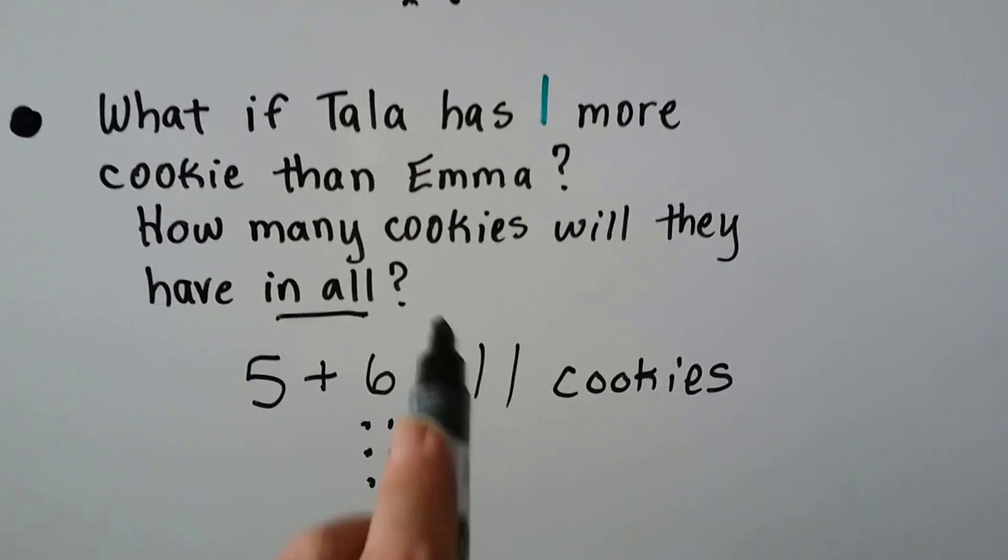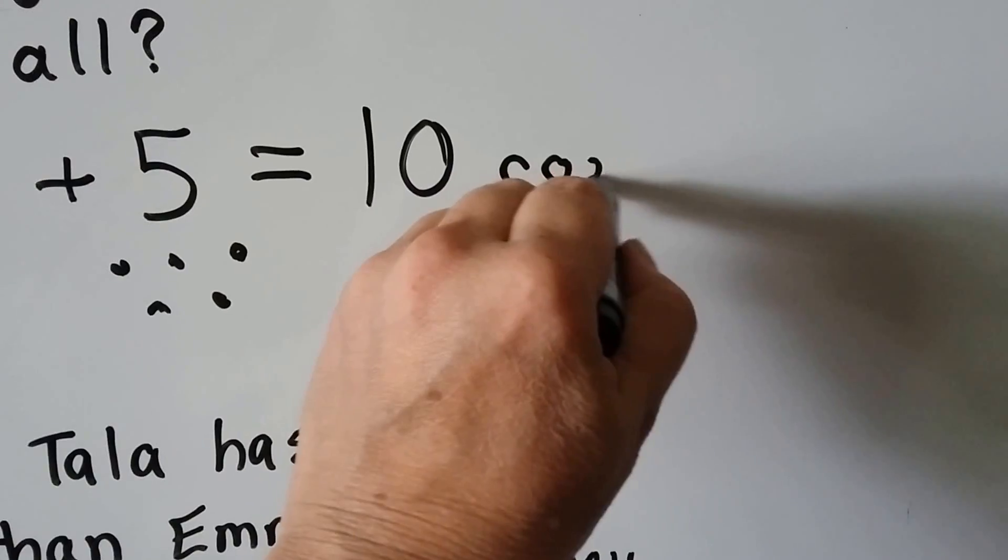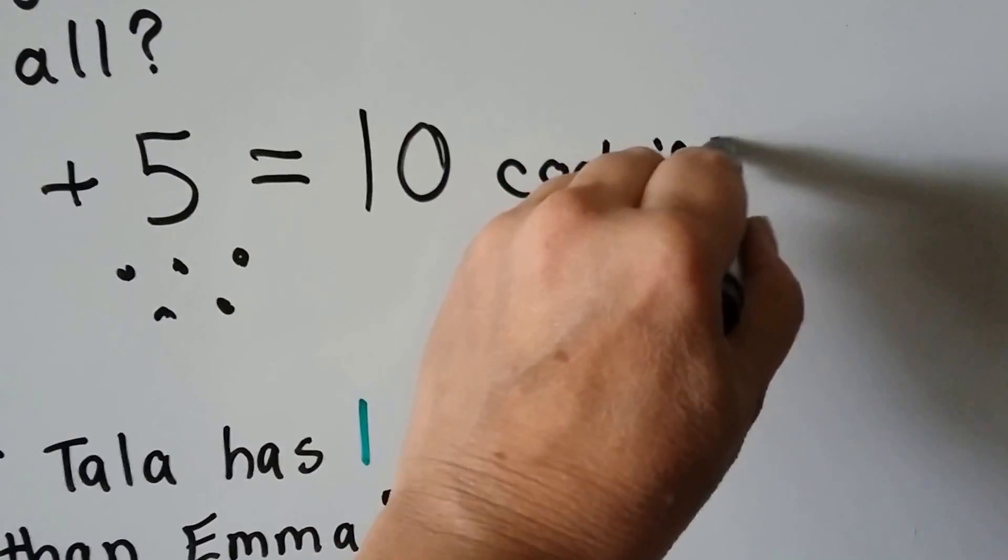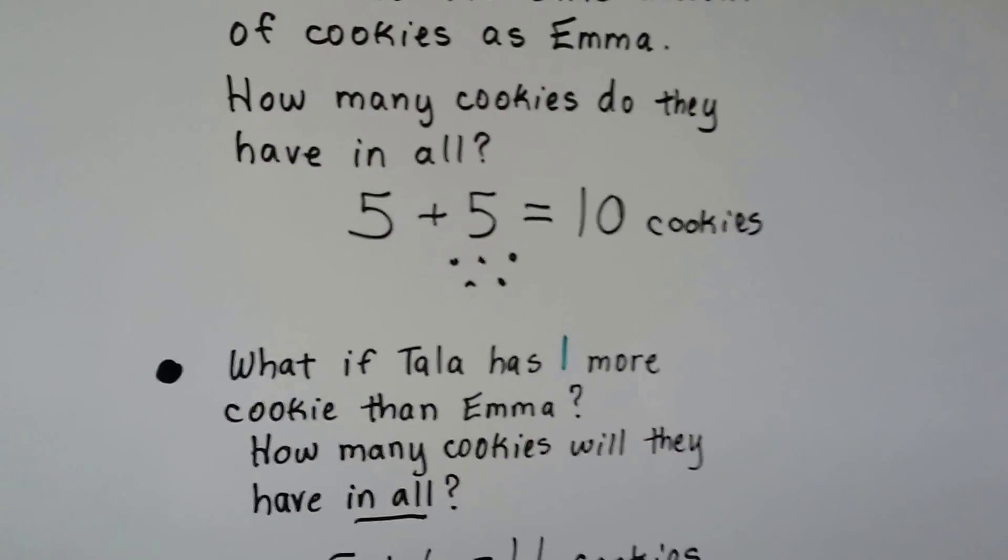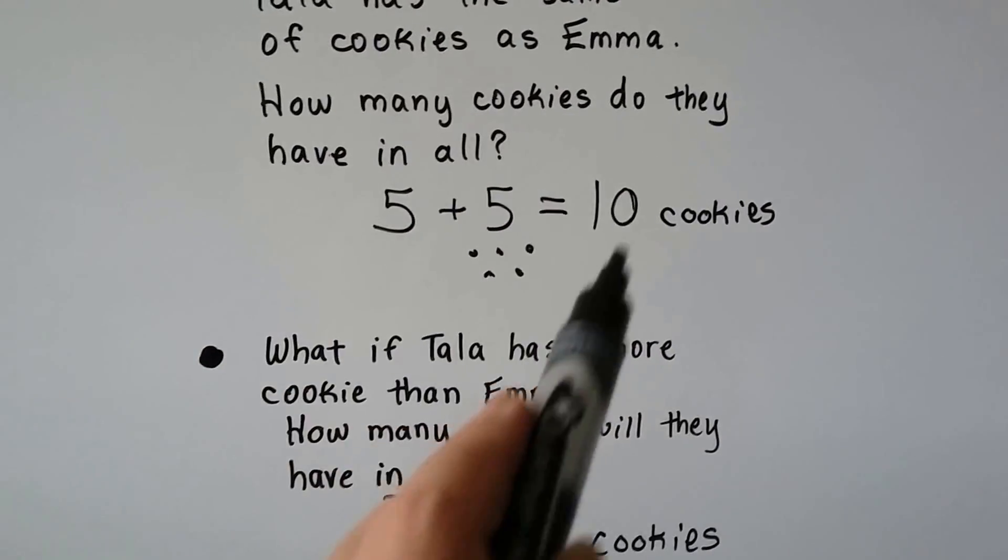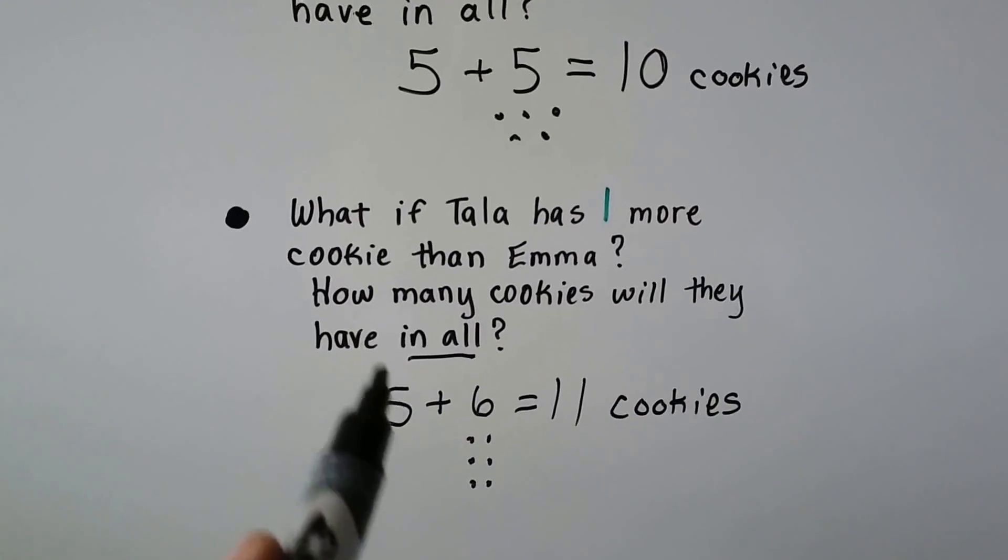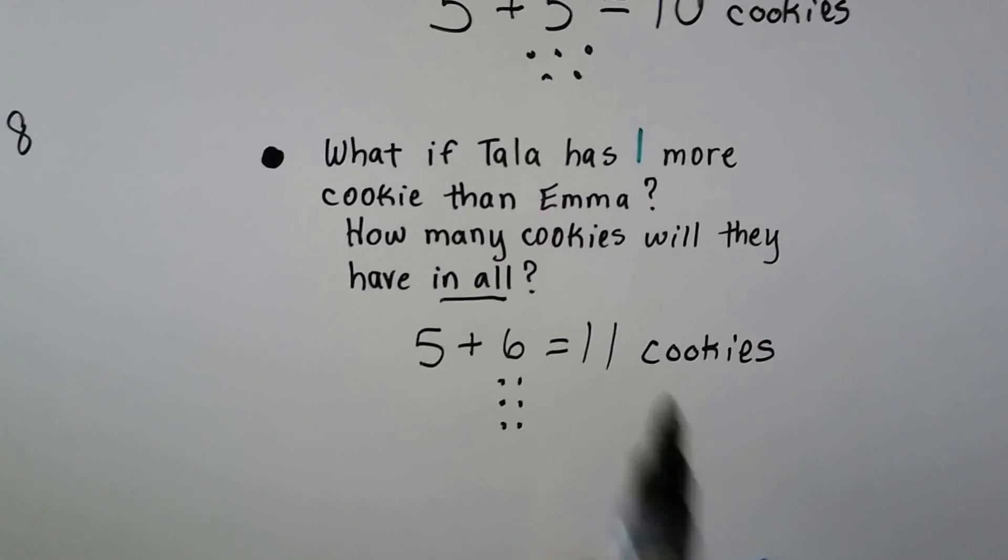See? You want to make sure you label what they are. So this would be ten cookies, wouldn't it? Whenever we do a word problem and we answer what it's asking of us, we label what it is. How many cookies do they have in all? Ten cookies. Now how many do they have in all? Eleven cookies. All right? It's very important to label your word problem answers.